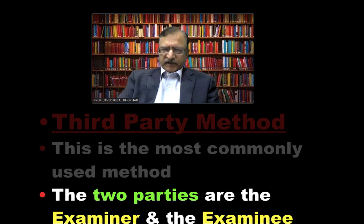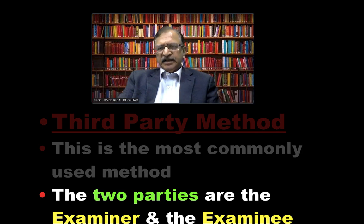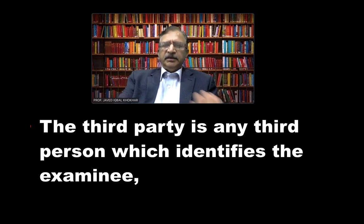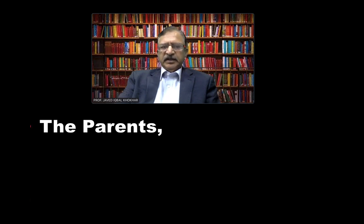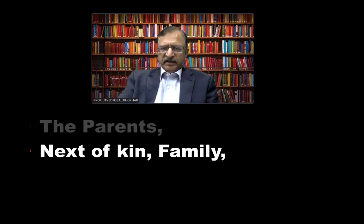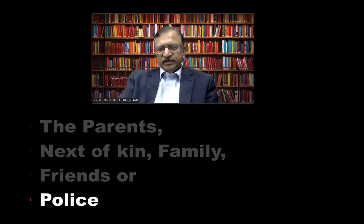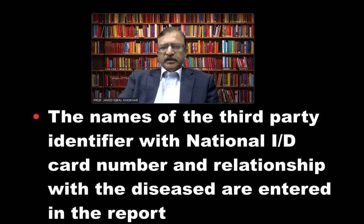The third party method is the most commonly used method. That means there are two parties: one is the examiner, the doctor, and the other is the examinee — the person, the individual, or the dead body. The third party is the third person who identifies the examinee, and that third party may be the parents, the next of kin, the family, friends, the police, or any third person. The name of the third party, their national identity card number, and their relationship with the deceased or the living person are entered in the report.